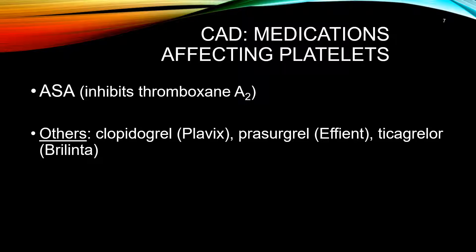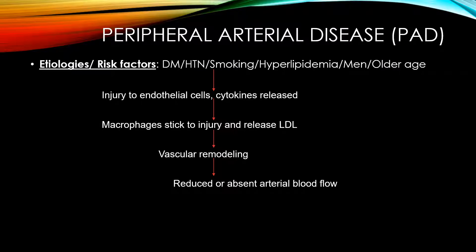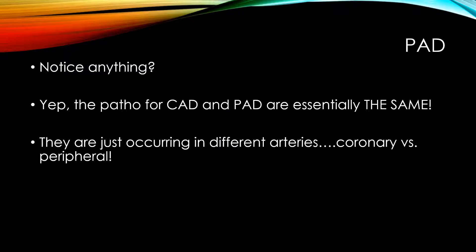Now let's look at peripheral arterial disease, or PAD. The pathophysiology should look familiar — it's the same process as CAD, eventually leading to reduced or absent arterial blood flow, but to the extremities. CAD narrows the lumen of a coronary artery; PAD narrows the peripheral arteries feeding our lower legs and feet. Same process, different location.